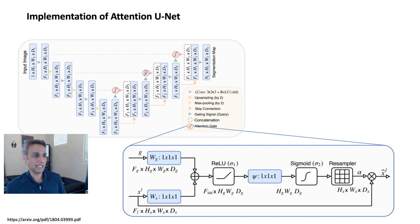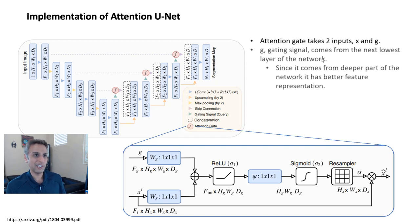So there will be a slight difference in the dimensions. Because this is coming directly, I think I put that in text over there, it takes two inputs, X and G, and G is the gating signal, it comes directly from one step lower right here. And X is coming from one step higher up there.